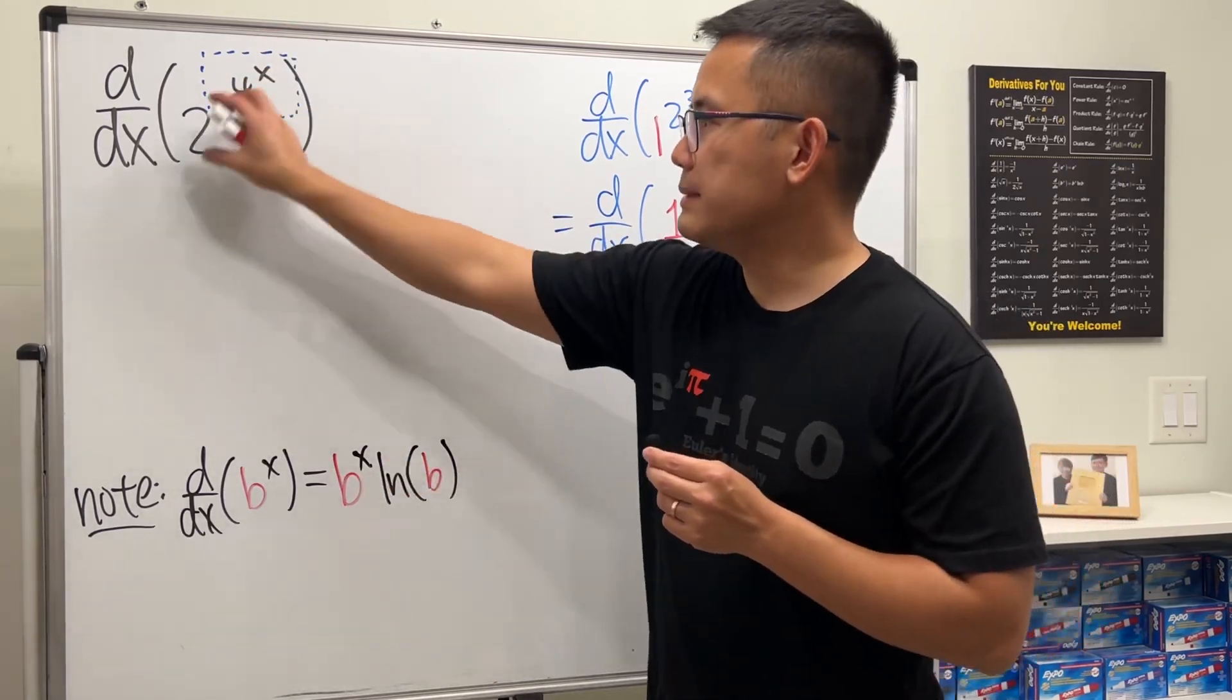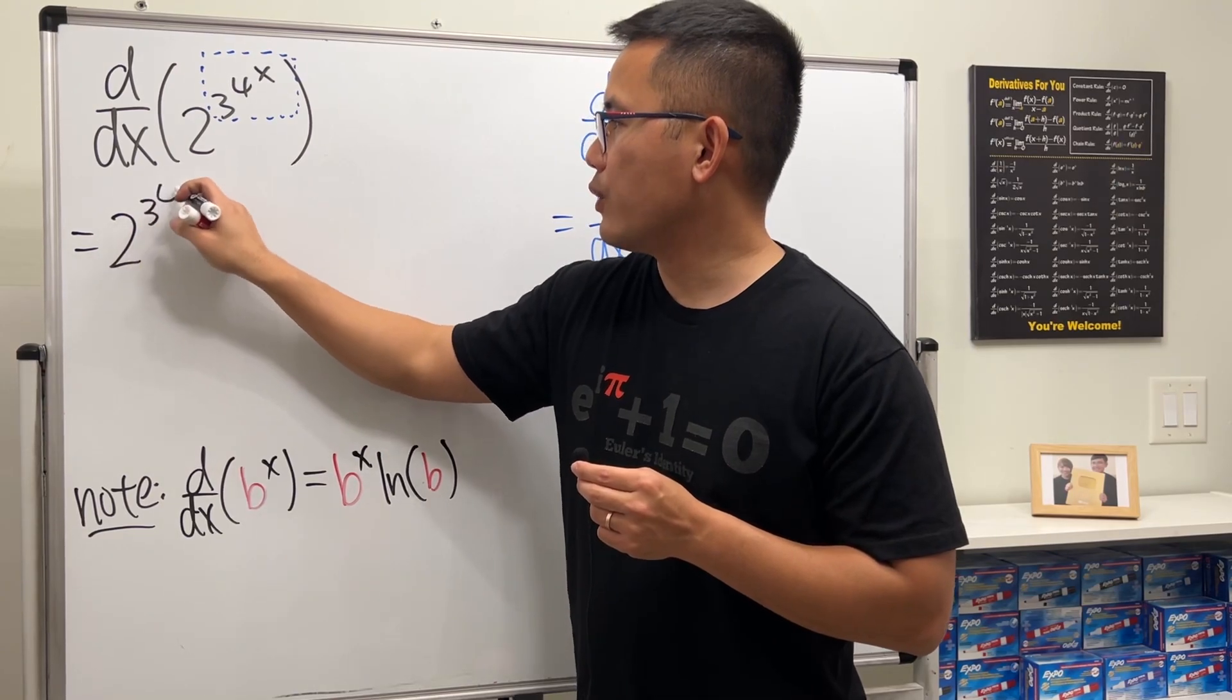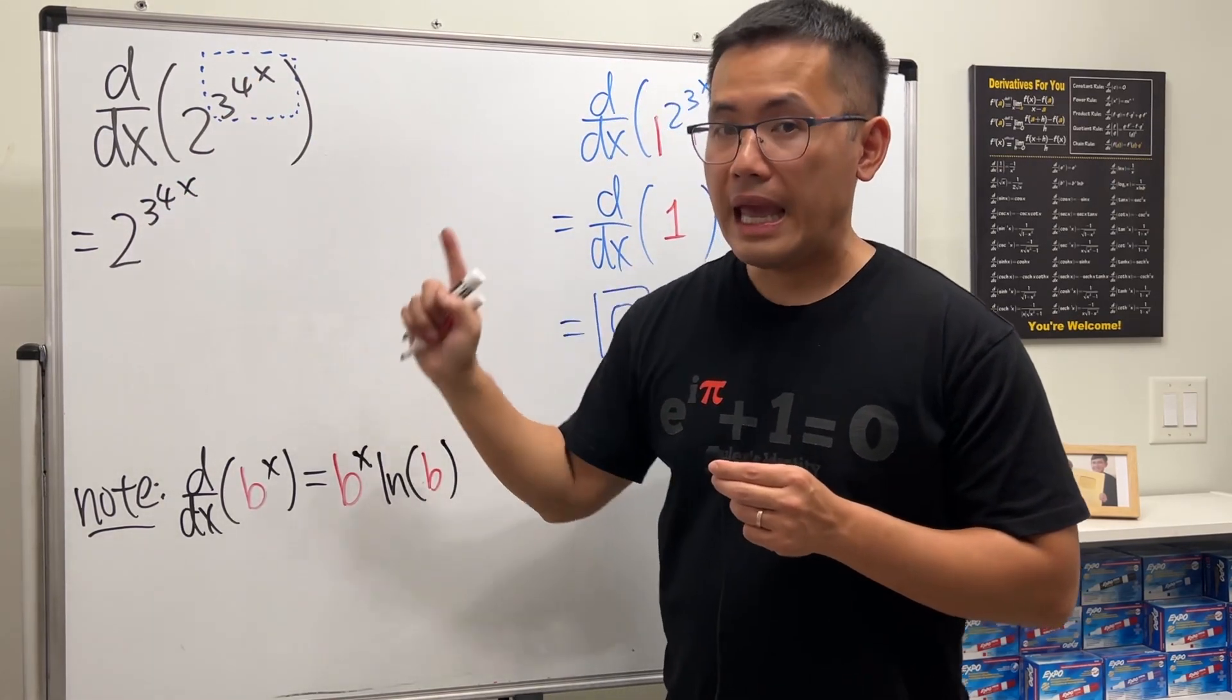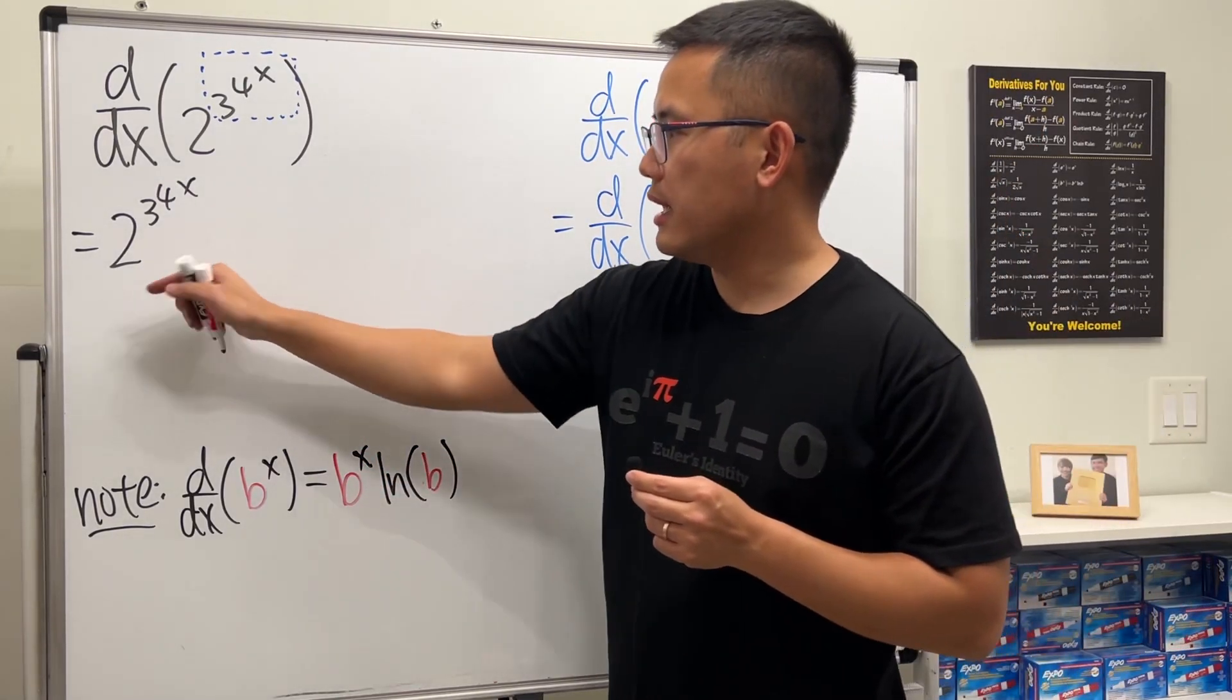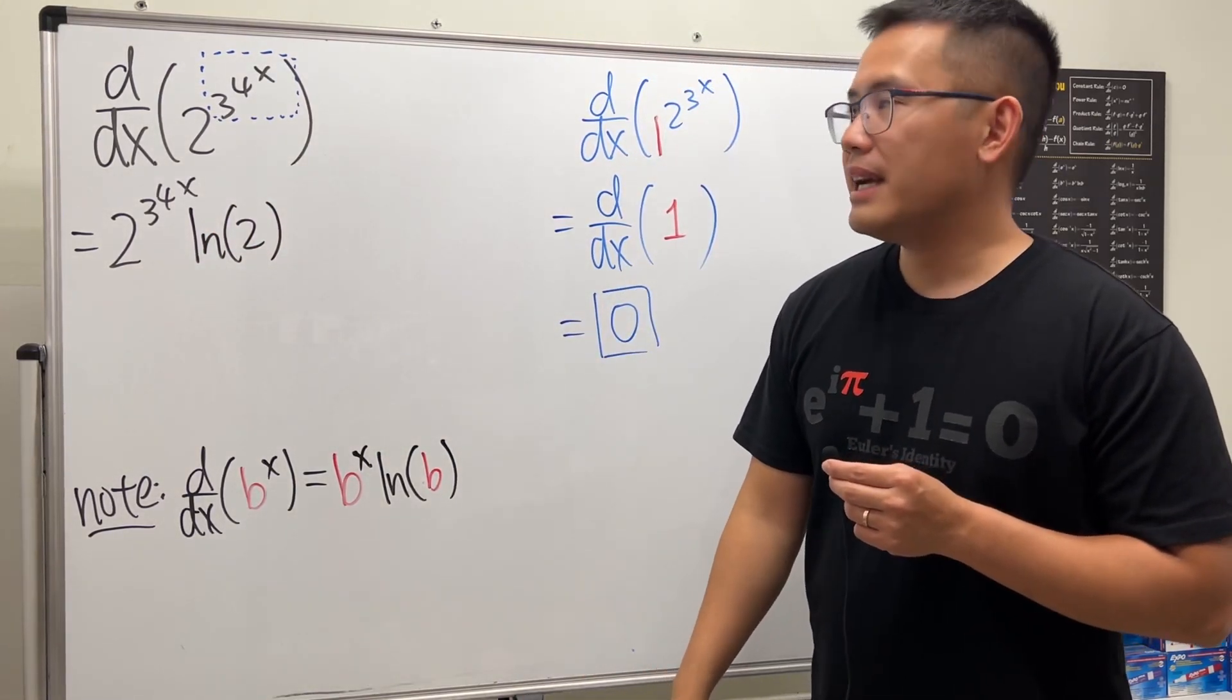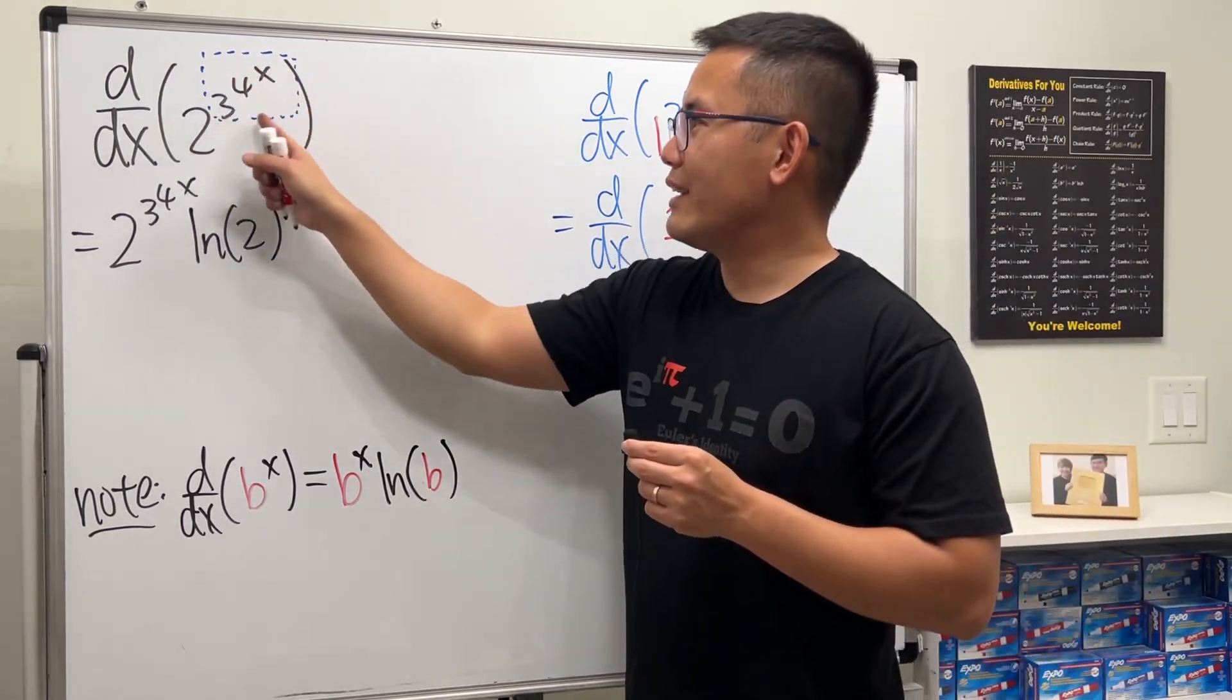Now we have 2 to the something. So first, this part repeats, so we get 2 to the 3 to the 4 to the x. 2 to the same thing. And we will have to multiply by ln b, in this case it will be ln 2. Next, we will have to use the chain rule, meaning we will have to multiply by the derivative of the box.